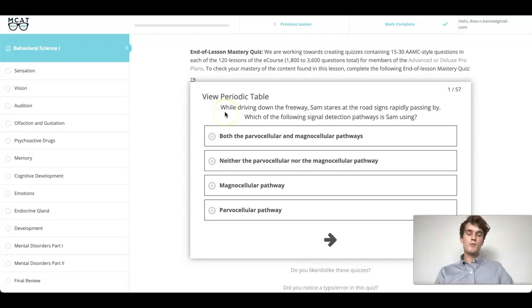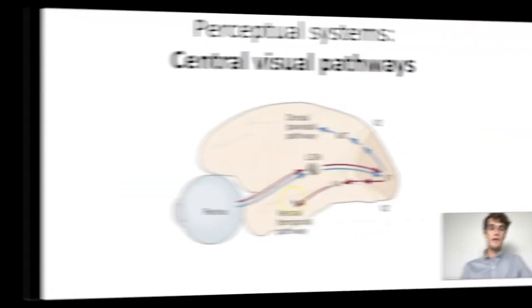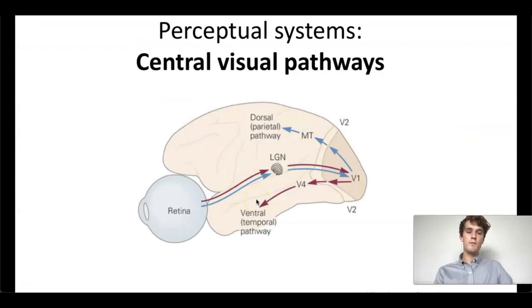To answer this question, we need to understand a little bit more about the parvo and magnocellular pathways. Both are involved in visual processing. Now this slide can look a little bit intimidating, but there's really one key concept that I want you to take away from here.